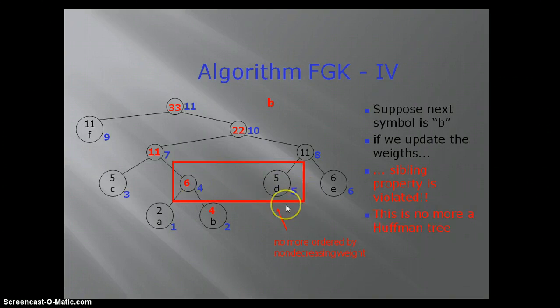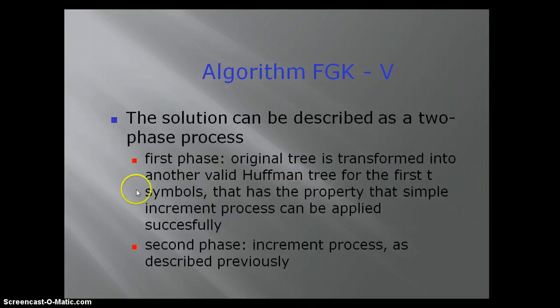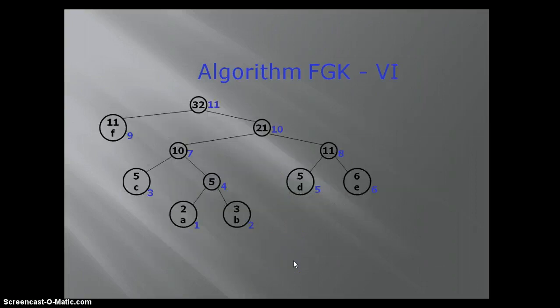So this is basically the problem. How will we solve it? We will use the FGK Algorithm. It works in two phases. In the first phase, the original tree is transformed into another valid Huffman tree. In the second phase, we increment the value of nodes.